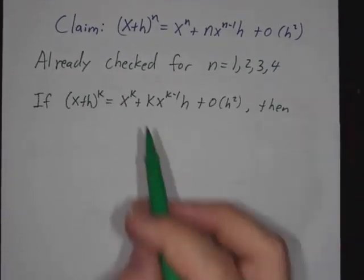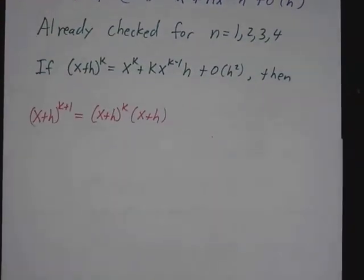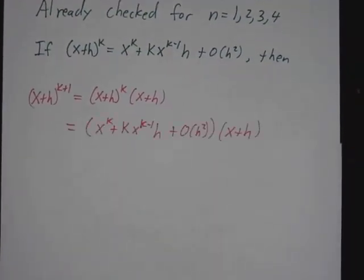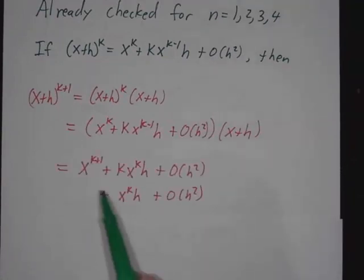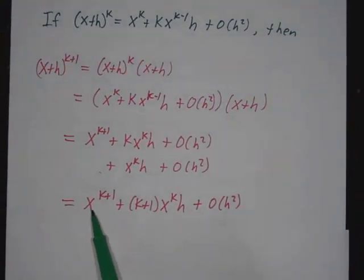Now, if you know that it works for a certain power, then you just multiply that power by x plus h. And you do it exactly the way we did before. Multiply by x, multiply by h, you get this one extra term. And you get that the formula works for the next power. So this is called a proof by induction. This argument shows that once you know it's true for n equals 1, it's true for n equals 2. Once you know it's true for n equals 2, it's true for n equals 3. n equals 4, n equals 5, n equals 6, so on down the line.